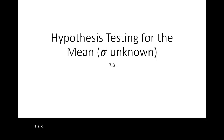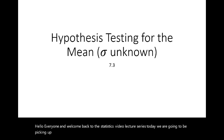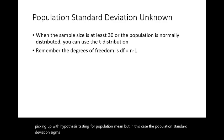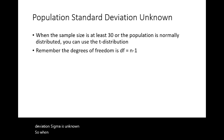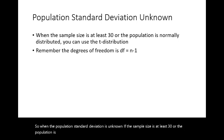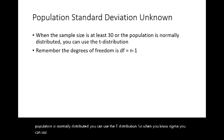Hello everyone and welcome back to the statistics video lecture series. Today we are going to be picking up with hypothesis testing for population mean, but in this case the population standard deviation sigma is unknown. When the population standard deviation is unknown, if the sample size is at least 30 or the population is normally distributed, you can use the t distribution. When you know sigma, you can use the z distribution — the standard normal distribution and a z score. When you do not know sigma, you can use the t distribution.